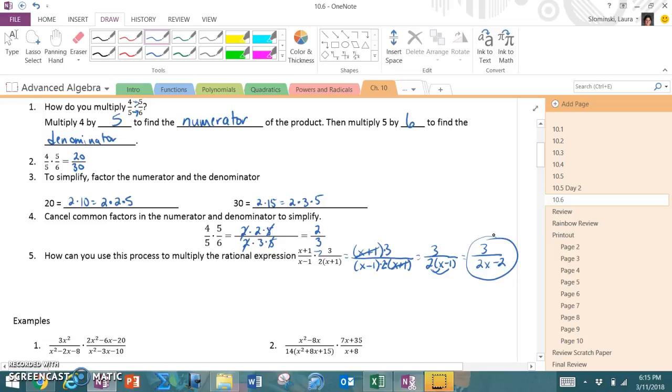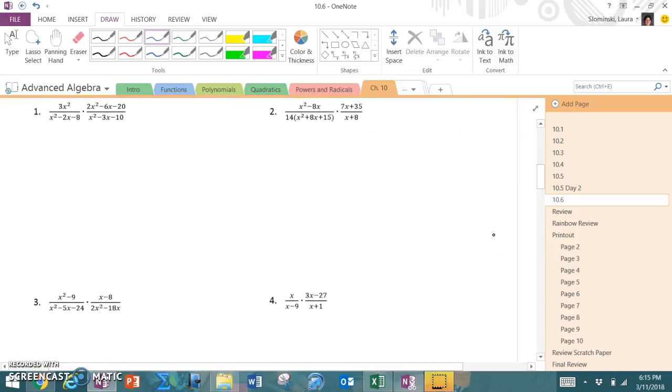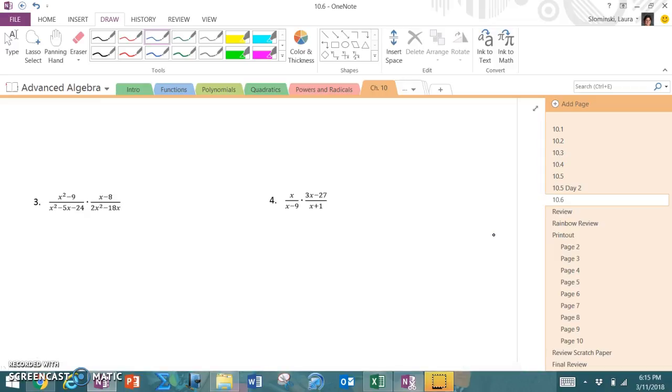With the examples on the front, I'm going to go a little out of order. I actually want to go down to number 4 here, because I feel like that's the most simplified. And what we want to do with this is we are first going to multiply straight across. So we have x times 3x minus 27 over x minus 9 times x plus 1. Now I look and I say, well, nothing cancels. So some of us would maybe multiply it out, but I need you to be careful.